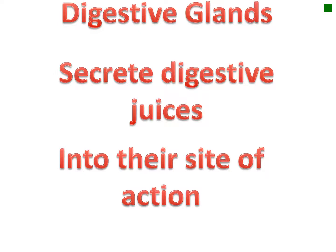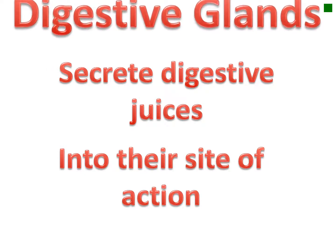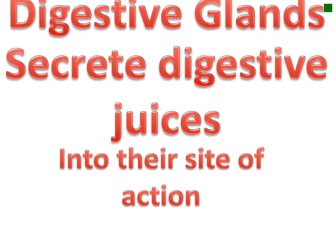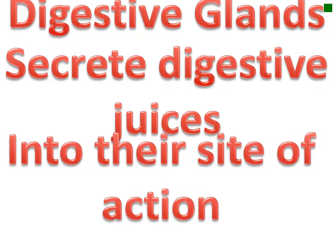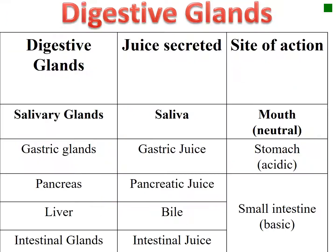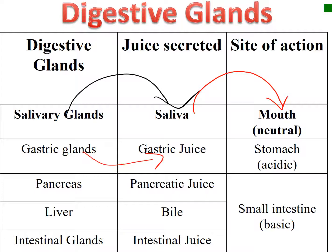Digestive glands include the salivary glands found inside the mouth, gastric glands, pancreas, liver, and intestinal glands. The main role of digestive glands is to secrete digestive juices into their site of action. For example, salivary glands secrete saliva inside the mouth, where the medium is neutral, meaning the pH is equal to 7.